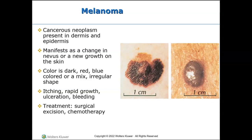Melanoma is a cancerous neoplasm present in the epidermis and dermis. It manifests as a change in a nevus or new growth on the skin, typically dark, red, or blue colored — or a mix — with an irregular shape. It often itches, is rapidly growing, may ulcerate, and may bleed. Treatment is surgical excision; the longer it remains in the body, the more deadly it gets as it spreads to lymph nodes and becomes systemic. Chemotherapy and/or radiation may follow the excision.